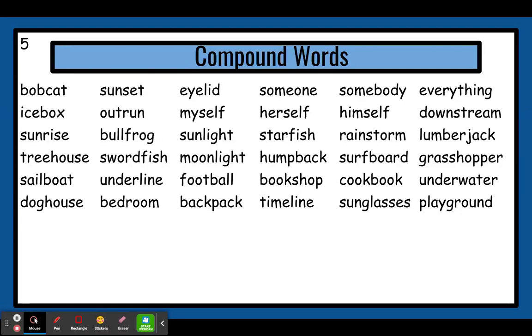So this word, Bob, talks about the tail on this kind of cat. This bobcat has a small, like a bobbed tail. Bob. Cat. Bobcat.